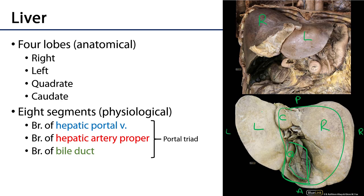When we look at the liver purely from a functional perspective, there are eight different segments that don't fall neatly into these anatomical lobes. Each of these segments is served by independent branches of the hepatic portal vein and the hepatic artery proper, and these two vessels are what send blood into the liver sinusoids. Each segment also has its own branch of the bile duct, so bile leaves the liver and enters the biliary tree from each of these eight segments.